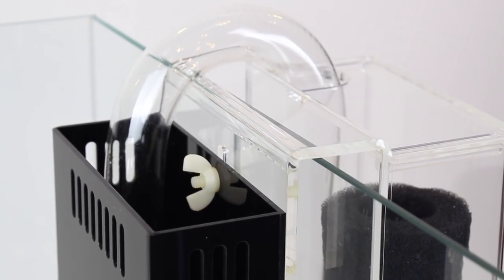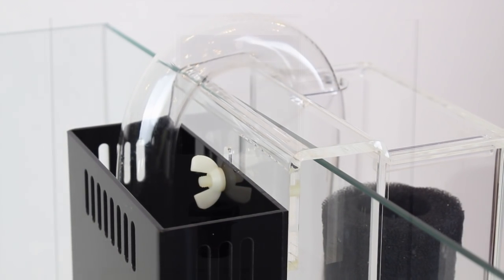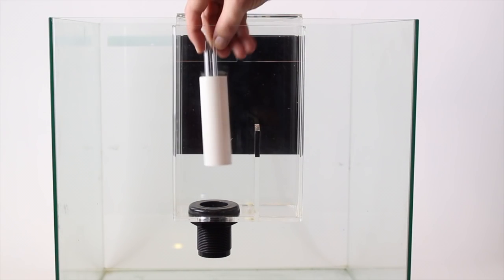The overflow box features a one-piece acrylic hanger that fits on any aquarium. It's pre-drilled and ready for installation of the bulkhead fitting.